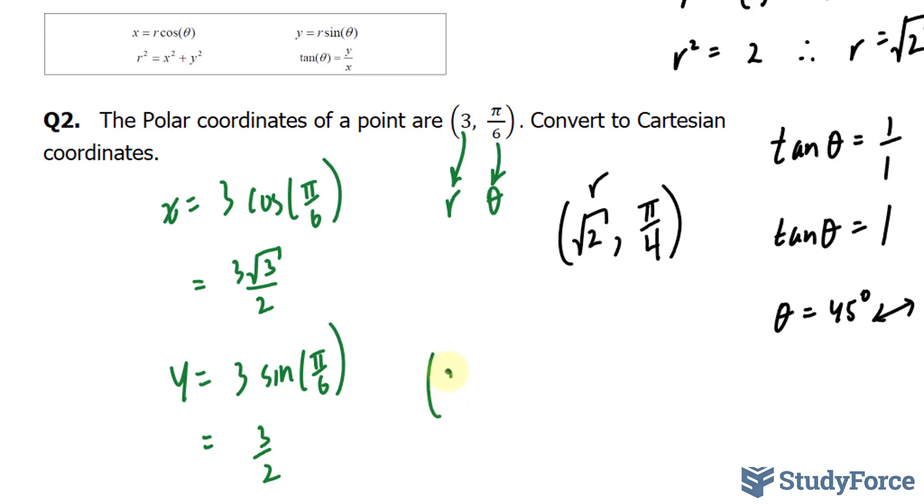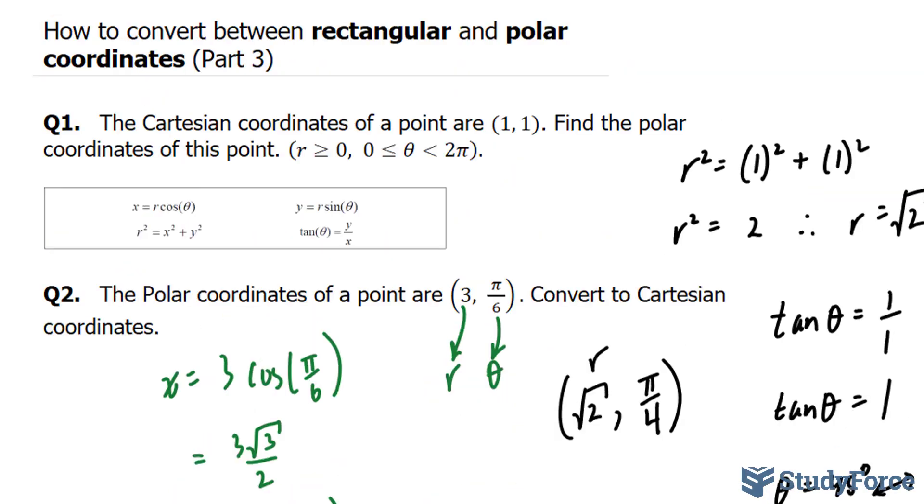Therefore, my point is at 3 root 3 over 2 and 3 over 2. There you have it. Two more examples on how to convert between rectangular and polar coordinates.